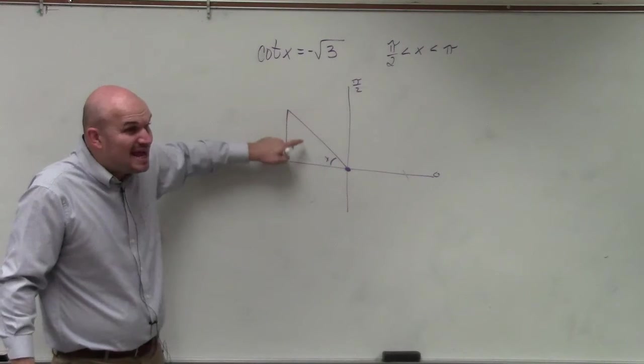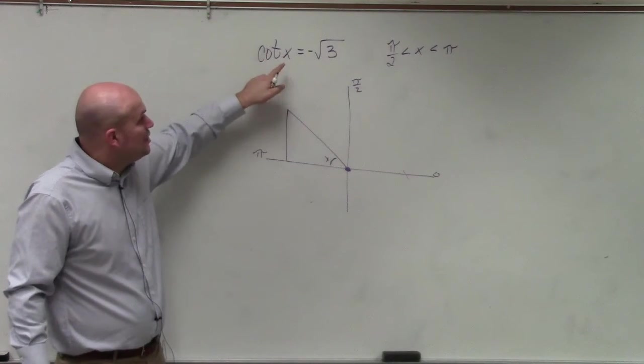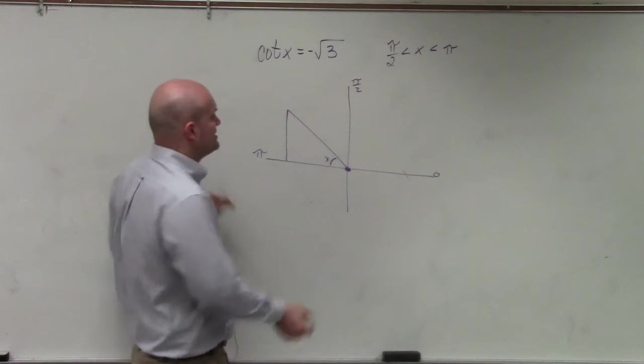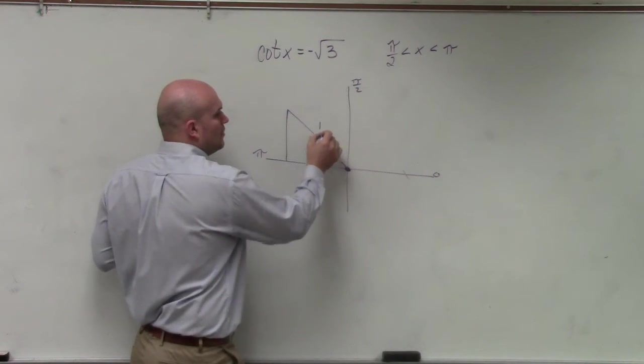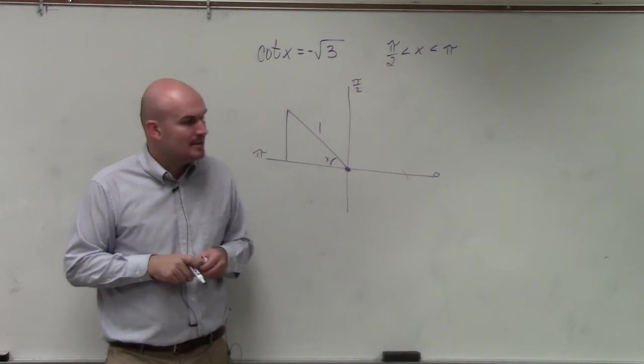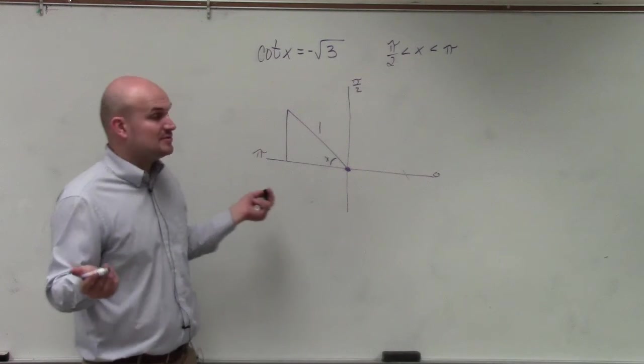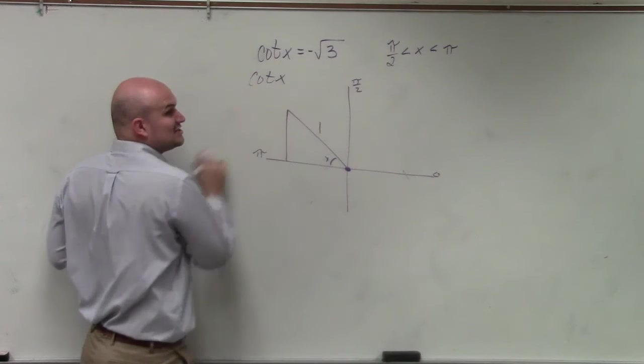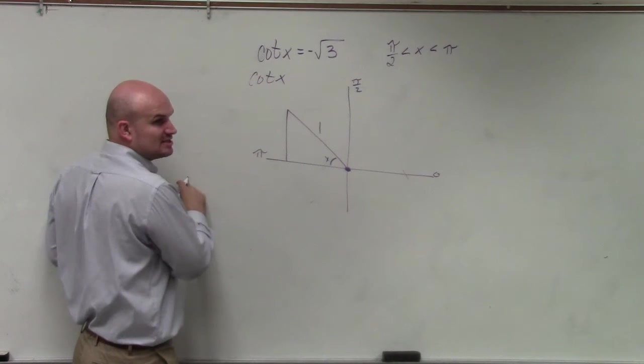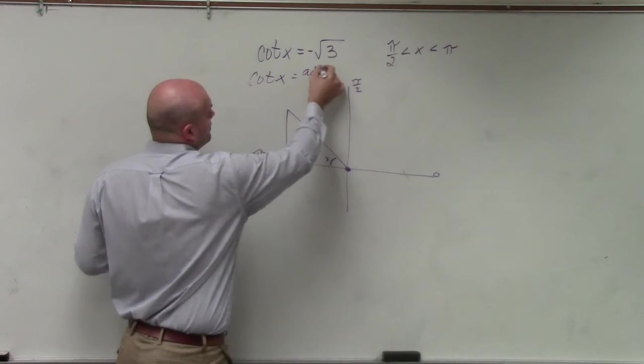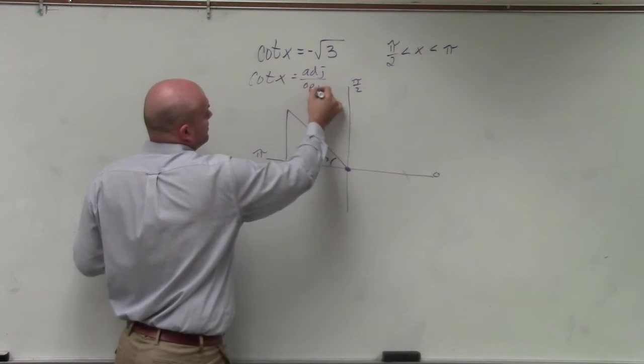So they're basically asking us, what angle produces cotangent of x where negative square root of 3? Now, remember when we talked about the unit circle, we always gave the radius to be 1. So let's just assume the radius is 1. And again, I'm using it without a calculator. Now, let's think about a couple different understandings. We know tangent is opposite over adjacent, right? So cotangent would be adjacent over opposite.